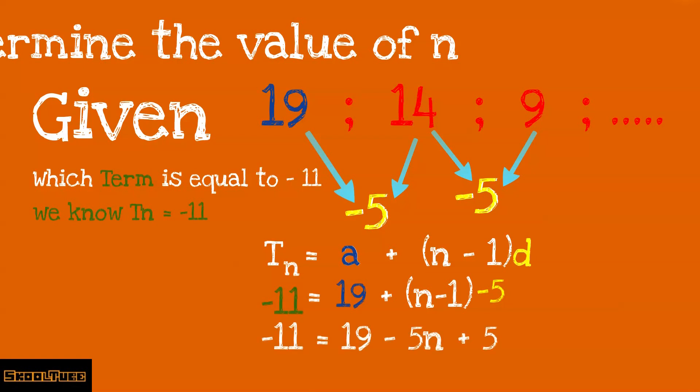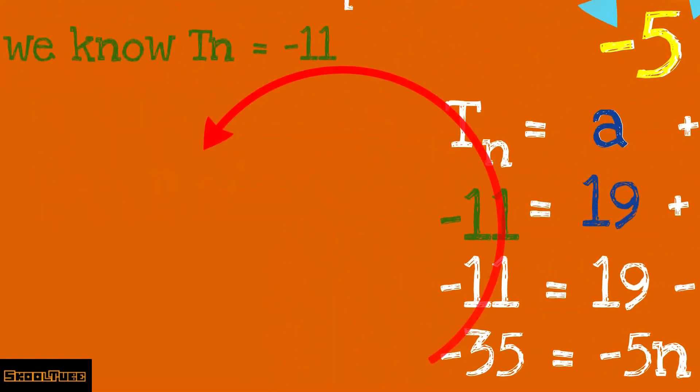When you simplify that you get minus 11 equals 19 minus 5n plus 5. So minus 35 equals minus 5n. Therefore, n equals 7. So we can say that T7 equals minus 11.